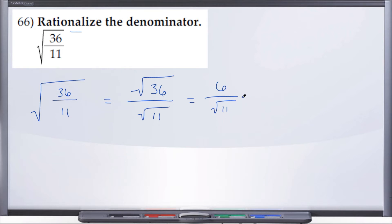The way that we're going to do that is by multiplying by one, but we're going to multiply by a special one. We're going to multiply by radical 11 over radical 11. Anything over itself is one, right?